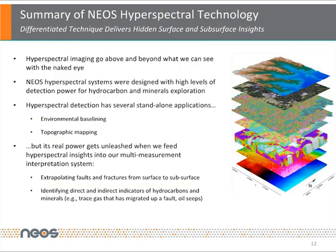To summarize, hyperspectral imaging goes above and beyond what we can see with the naked eye. NEOS hyperspectral systems were designed with high levels of detection power for hydrocarbon and minerals exploration. Hyperspectral detection has several stand-alone applications, which include environmental baselining, composition, topographic mapping, and others. But its real power gets unleashed when we feed hyperspectral insights into our multi-measurement interpretation system. This allows us to extrapolate faults and fractures from surface to subsurface, and helps in identifying direct and indirect indicators of hydrocarbon and minerals. Thanks so much for listening.